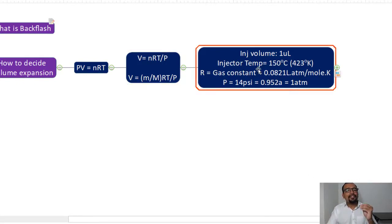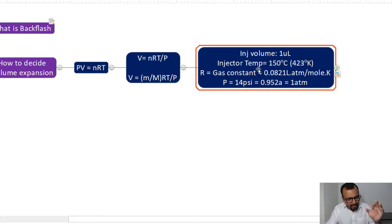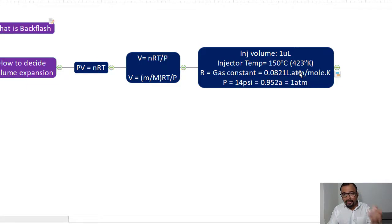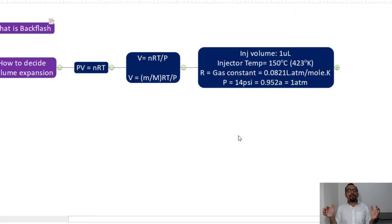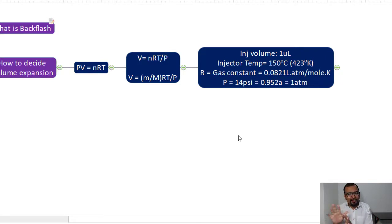Let us assume the injection volume is 1 microliter. I will now explain how to calculate the volume of the gaseous injection. Let us assume the injector temperature is 150°C, which converts to 423 K. R is the gas constant, 0.0821 L·atm/(mol·K). The pressure inside the injector port is 14 psi, which converts to 0.952 atmosphere — roughly 1 atmosphere, which we will use for the calculation.